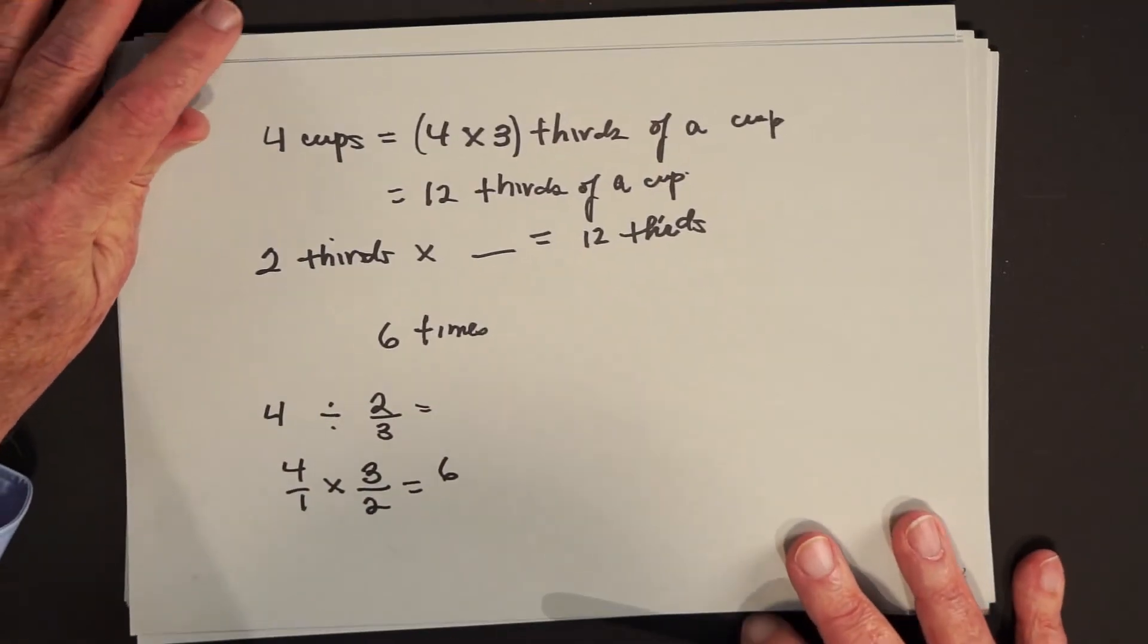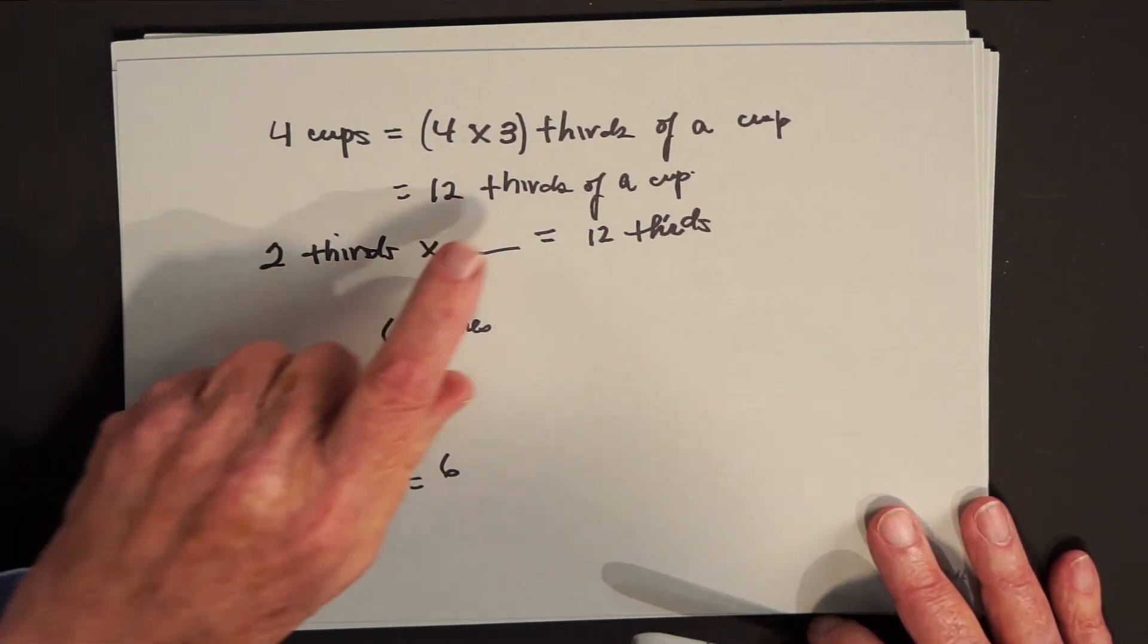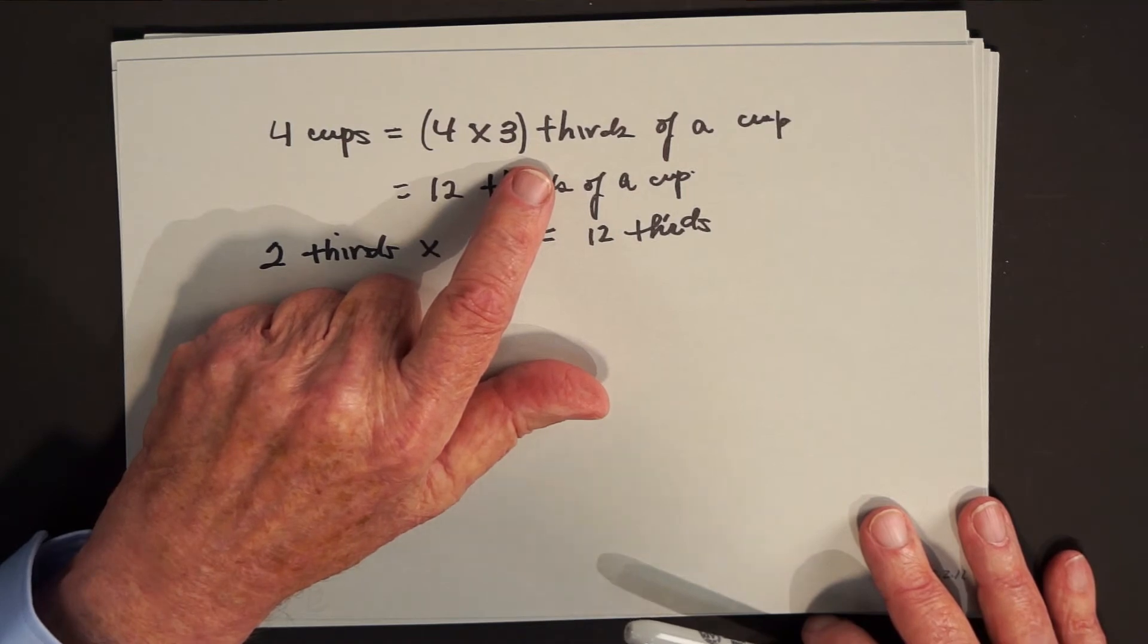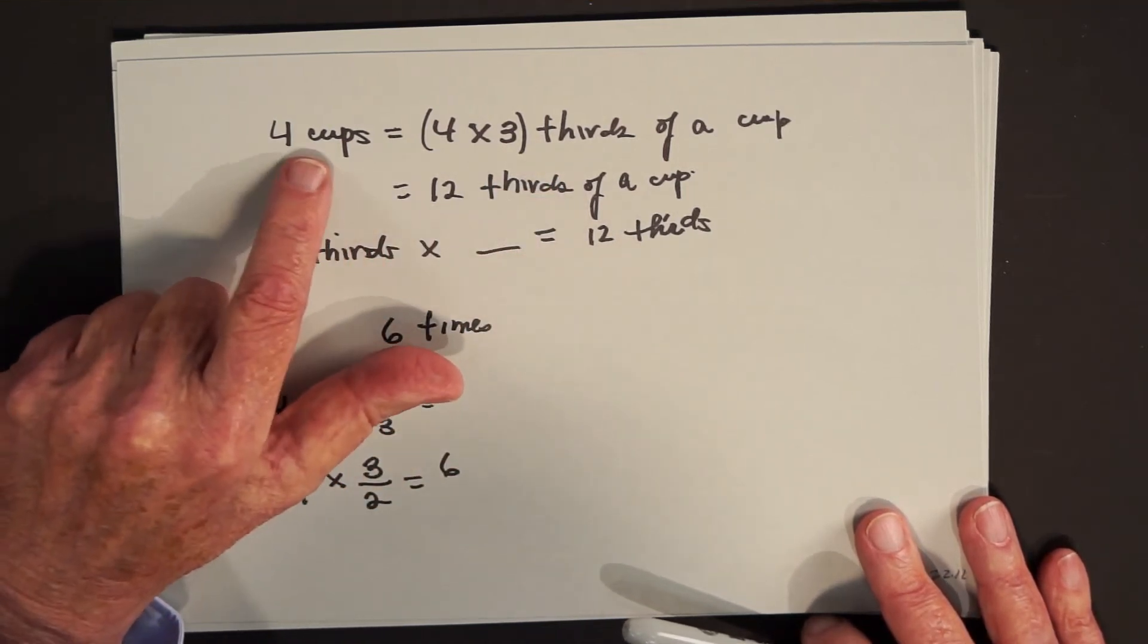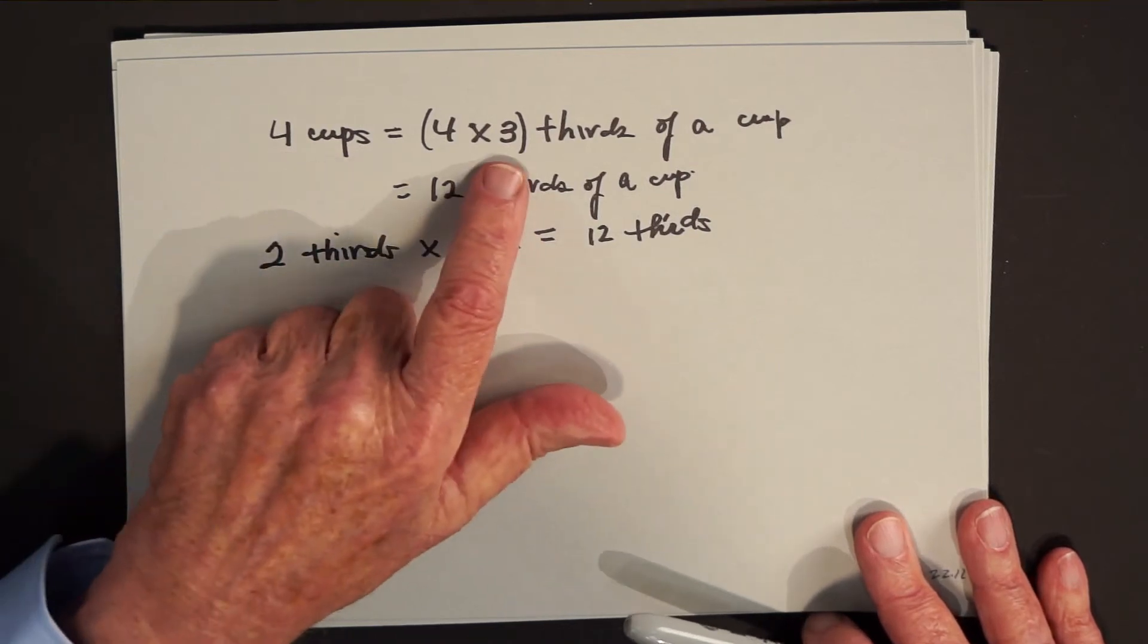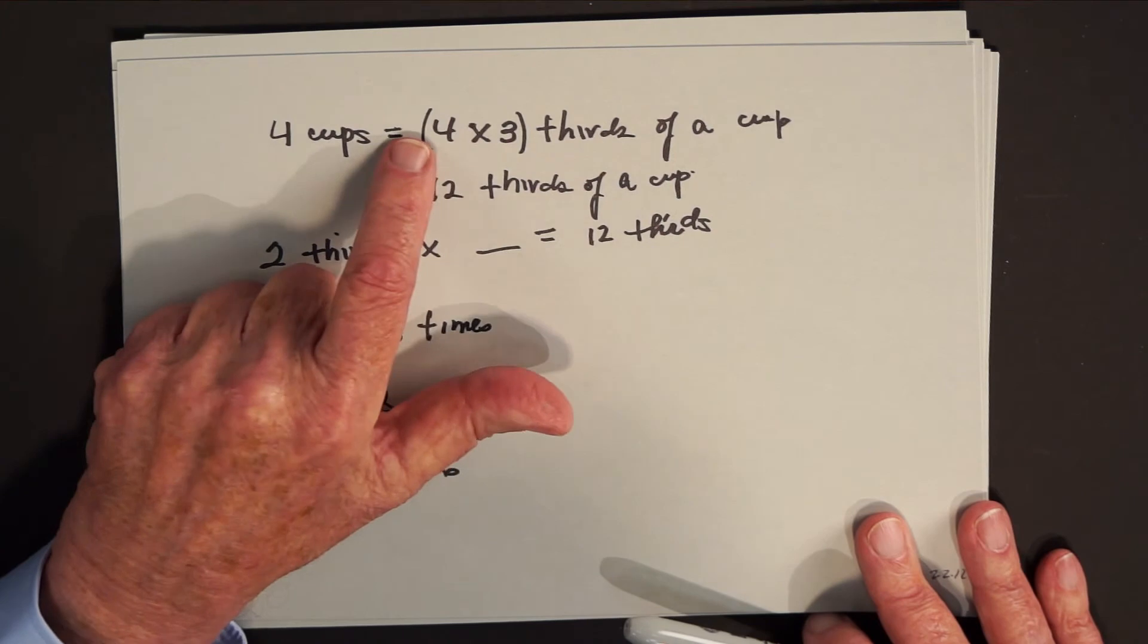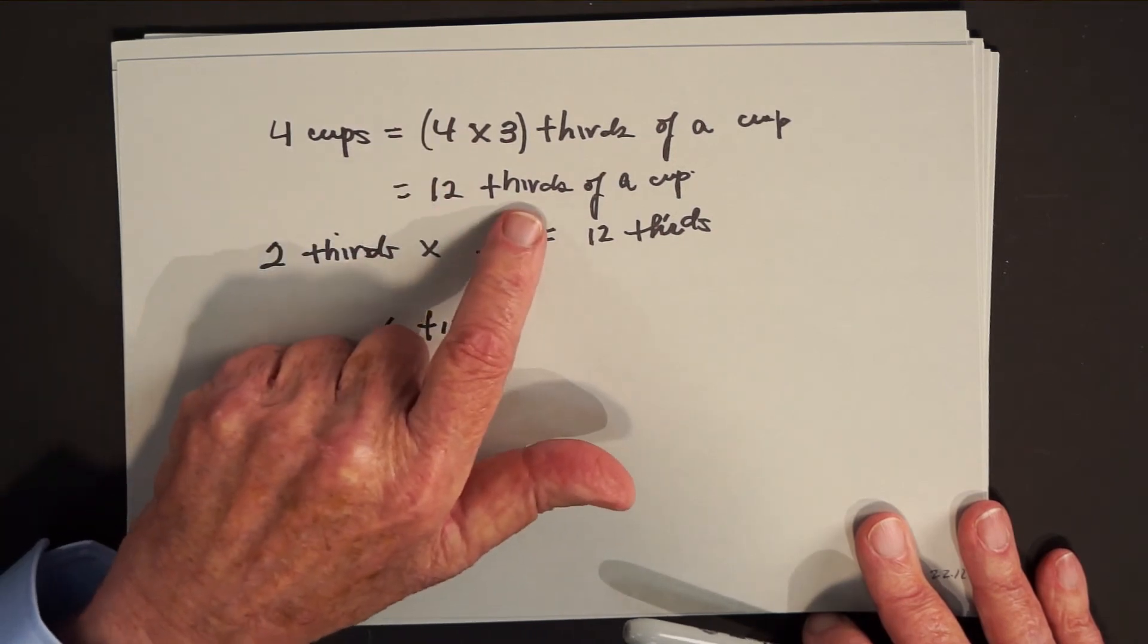The trick I would use to make this seem more like a whole number problem is, since we're dealing with a two thirds of a cup measuring cup, it would be nice to work in thirds. So what would four cups be? Each cup is three thirds, so four cups would be three thirds four times. So another name for four cups is twelve thirds of a cup.